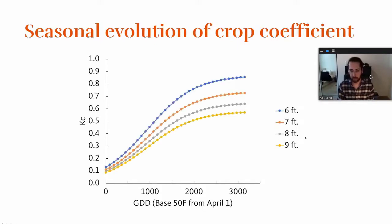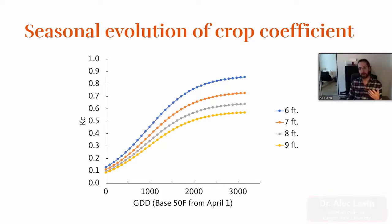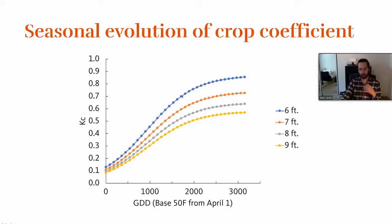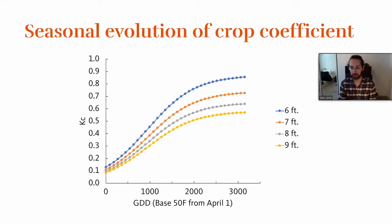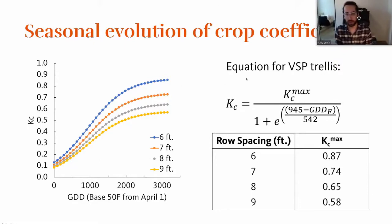Here's what the Kc curve looks like for an eight-foot row spacing. Row spacing really changes this — the seasonal development over time is the same, but the absolute value and slope change based on row spacing. If you're on a six-foot row spacing in the Willamette Valley, your crop coefficient will be higher and develop differently than on a nine-foot row spacing, and the ultimate amount of water you'd need to apply would be higher because you have more rows per unit land area.